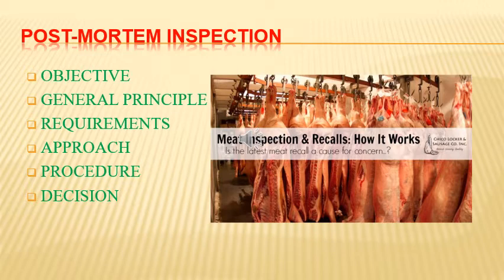First is the objective — what is the importance and purpose of post-mortem inspection. Then about the general principles — how to do it and the basic principles. Then the requirements — what facilities are required. Then the approach — the basic steps we should follow. After that, the detailed procedure for different organs, carcass, and other species. And finally, we will discuss the decision or judgment based on the examination findings.